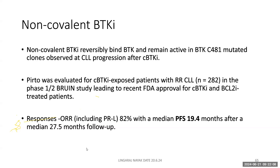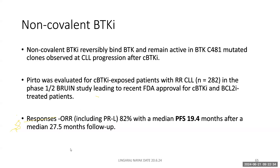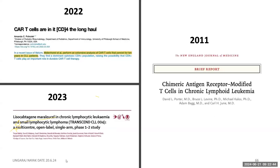BTK inhibitors are covalently bound, but resistance develops through a C481 mutation at the tyrosine kinase domain. Non-covalent BTK inhibitors like pirtobrutinib bind to the BTK site differently and remain active even in the presence of C481 mutations. The BRUIN study showed approximately 80 percent response rate for pirtobrutinib with median PFS of 19 to 20 months.